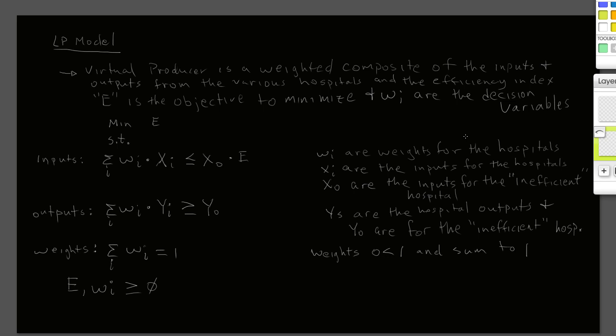The output constraints are the sums of the weights times the inputs for each individual hospital, and those have to be greater than or equal to the outputs for the hospital under study. On the output side, we're looking to see if we can produce at least as much output as county is producing, if not more. The last constraints are the weights, which have to all sum to one — so they're between zero and one and sum to one. Decision variables have to be greater than or equal to zero, the non-negativity constraint.